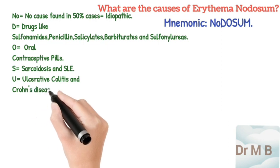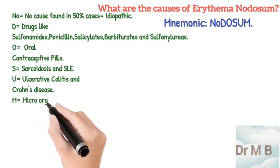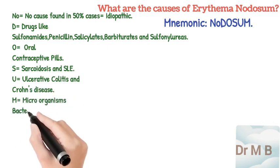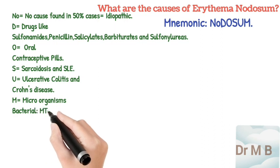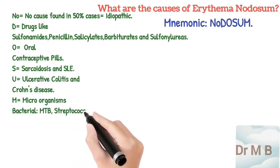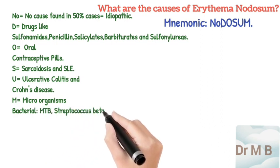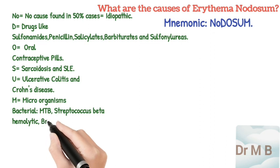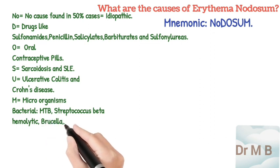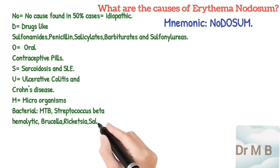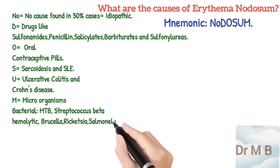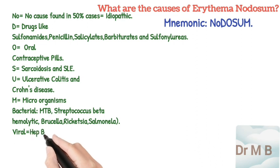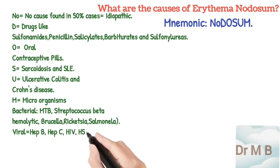S stands for sarcoidosis and ACE. U stands for ulcerative colitis and Crohn's disease. M stands for microorganisms, which include bacterial causes like Mycobacterium tuberculosis, Streptococcus beta-hemolytic,